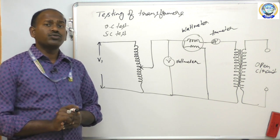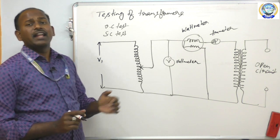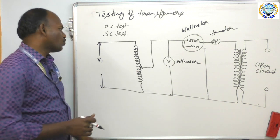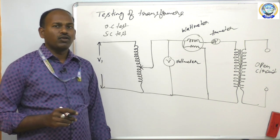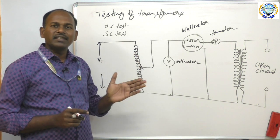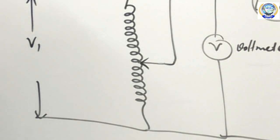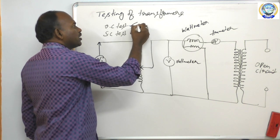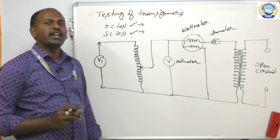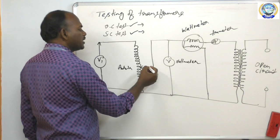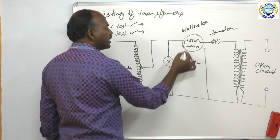An important point about the open circuit and short circuit tests: you are not placing loads at different parts of the transformer's load range. Simply, you are calculating values from two single tests. Here you have an auto transformer or variac, and you connect a voltmeter, wattmeter, and ammeter.